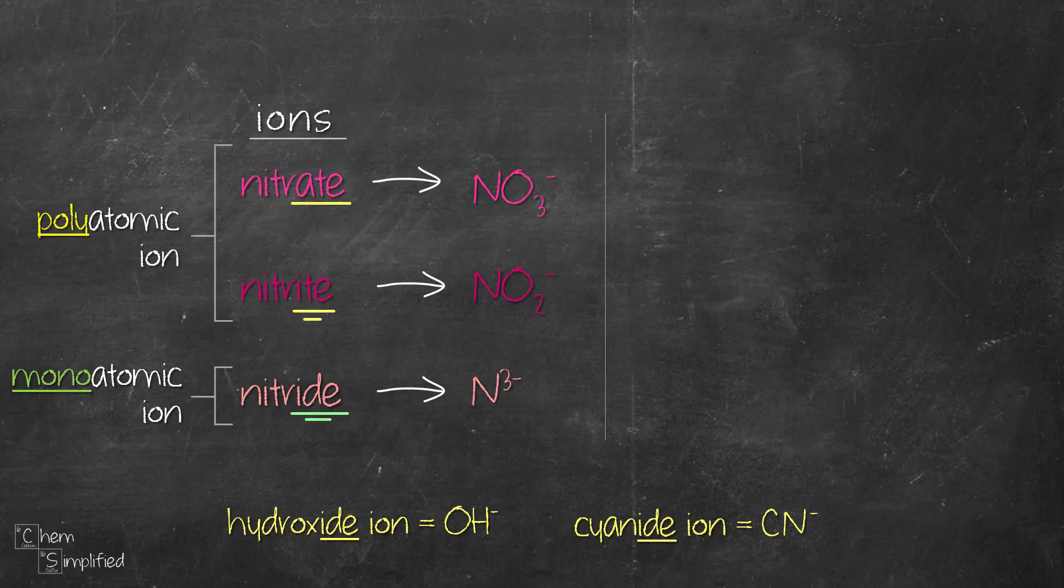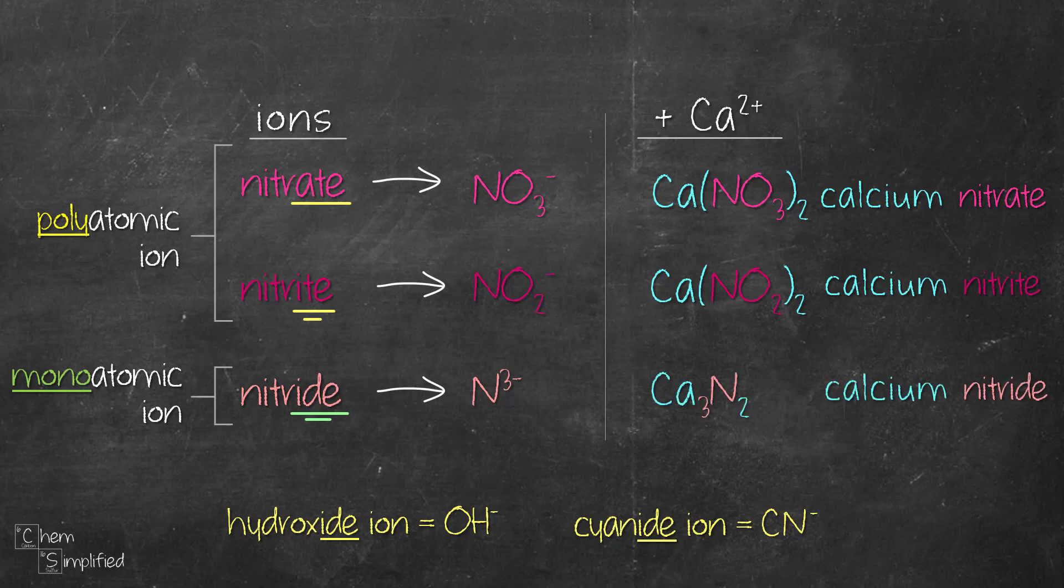Let's say we are asked to write the formula or name the ionic compound that's formed between Ca2+ with these ions and here's what we'll get. Notice that with the polyatomic ion, we need a bracket around NO3 and NO2 because we have two groups of NO3 and two groups of NO2. That's the difference.